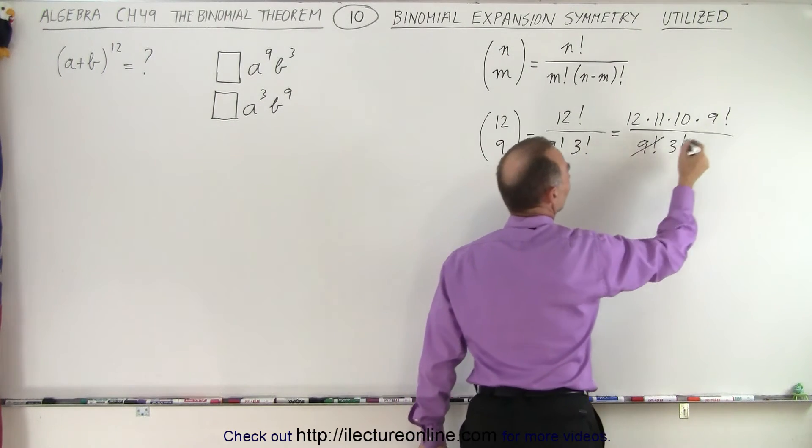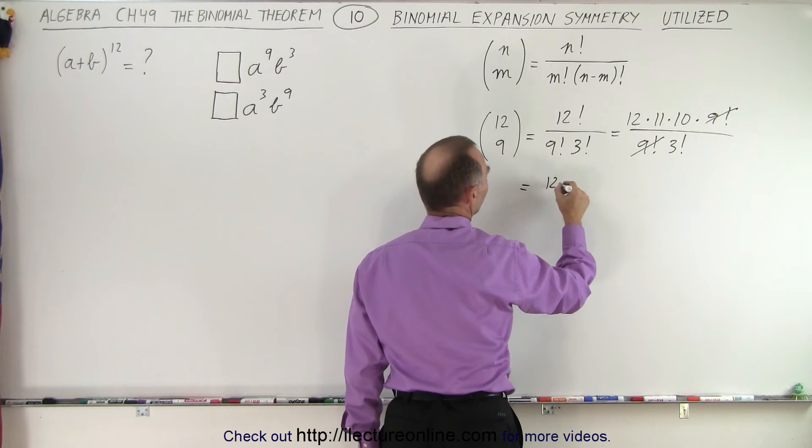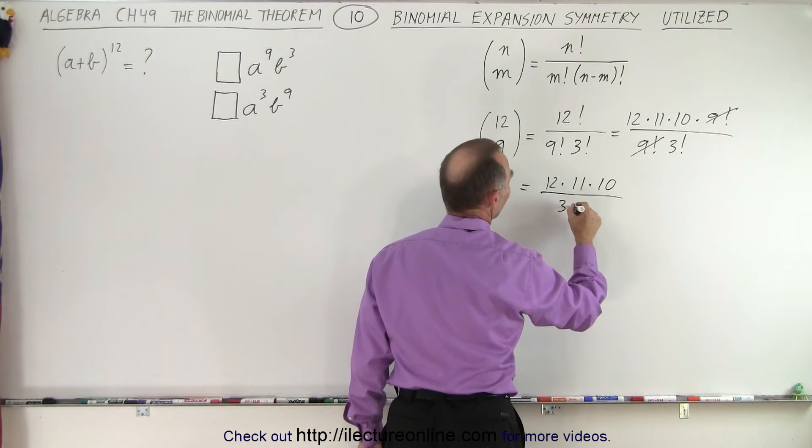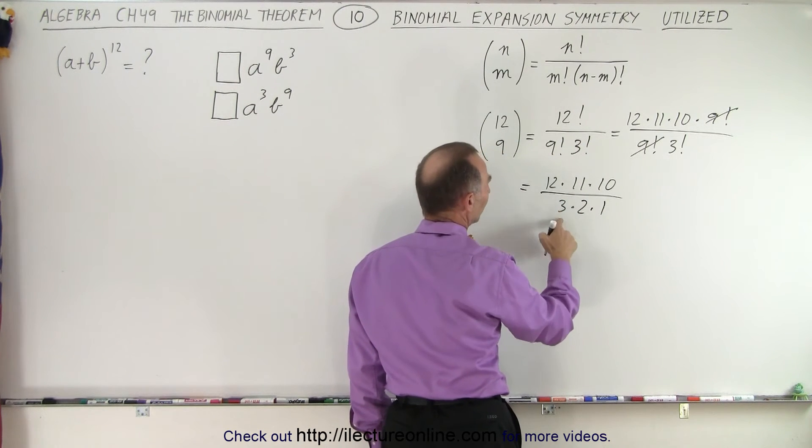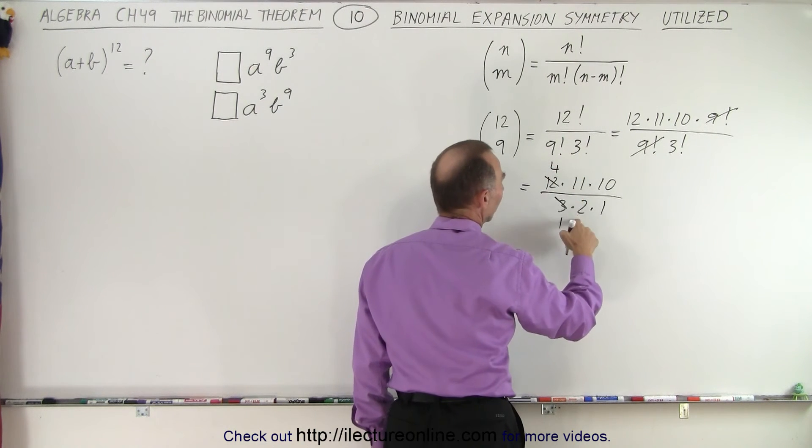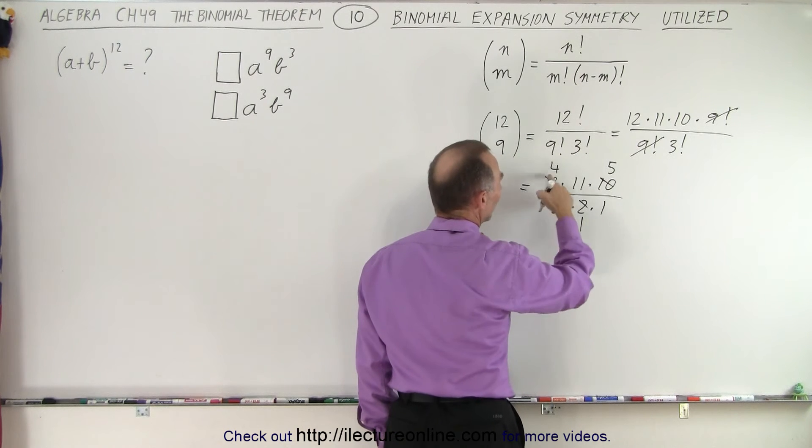And then it's easy to see that the 9 factorials cancel out. So now we end up with 12 times 11 times 10 divided by 3 times 2 times 1. Notice that 3 and 12 simplify to 1 and 4, and 2 and 10 simplify to 1 and 5. So now we have 20 times 11.